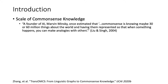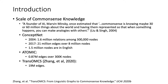Another important issue is the scale of common sense knowledge needed for machines to understand human language. It's estimated by Marvin Minsky that 60 million things about the world are needed. In comparison, currently 21 million edges over 8 million nodes are provided in ConceptNet, and 1.5 million of the nodes are in English. For Atomic, there are around 0.9 million edges.